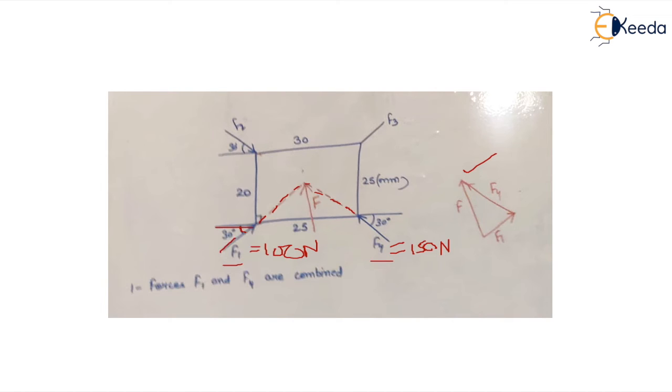You have to draw this diagram taking the scale and all the angles that are given. We plot f1, which is parallel to this line at 30 degrees to the horizontal, taking the scale, and the arrow sense is also given. We draw f1, then we draw f4 taking the proper scale that we have assumed, and their resultant is f.